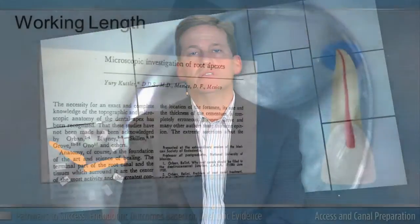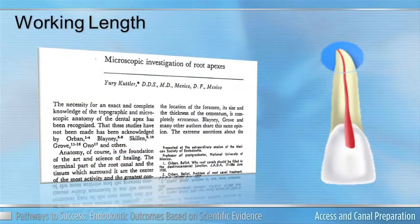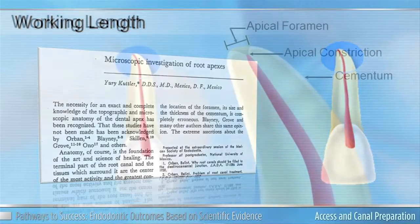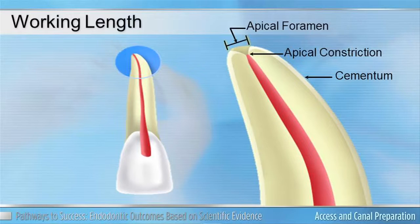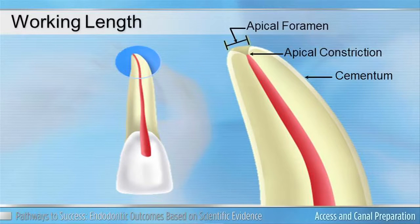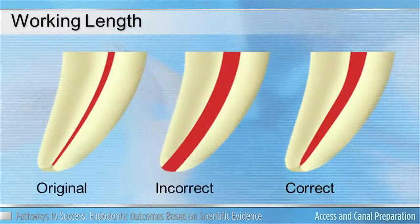When speaking of working length we have to consider some classic papers. One, Urie Cutler, 1955. Urie Cutler very eloquently described the difference between the apical constriction and the apical foramen. The apical foramen is what you most commonly experience when you look at a radiograph and you try to determine whether or not your file is at the right length. However, through his research we found that the apical constriction, which is also the CDJ, is the area in which we want to instrument to and obturate to for our optimal results.